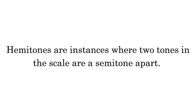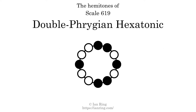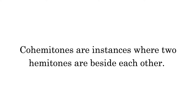Hemitones are instances where two tones in the scale are a semitone apart. This scale has two hemitones. Co-hemitones are instances where two hemitones are beside each other. This scale has no co-hemitones.